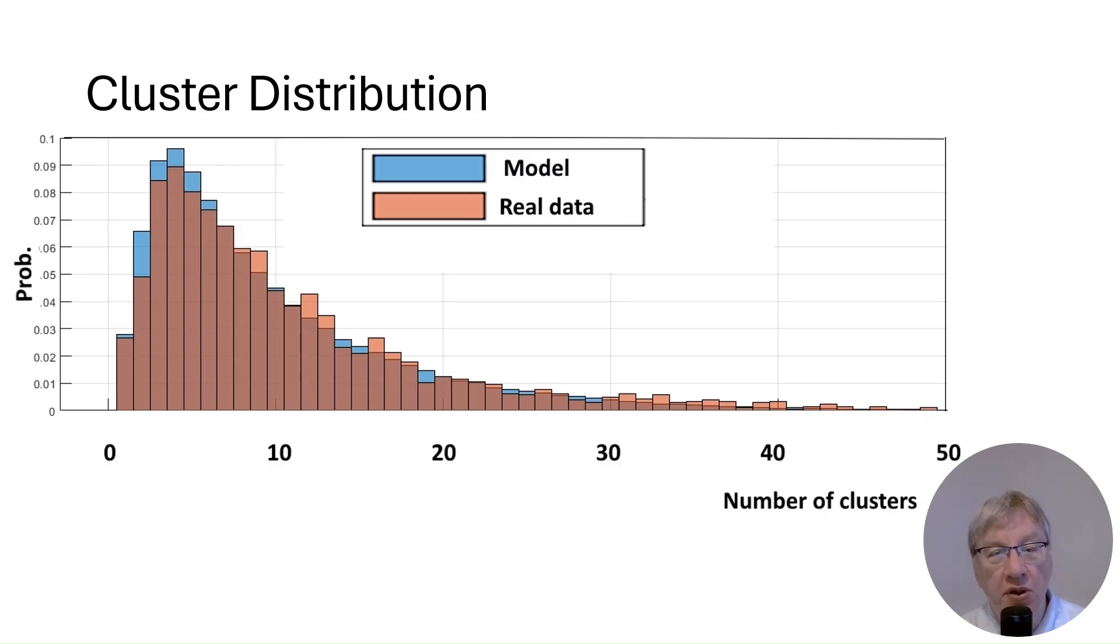Let us note that the best fit was found using a model with only two components: birth by contact and death or disappearance. The third component, independent emergence, is not necessary here.